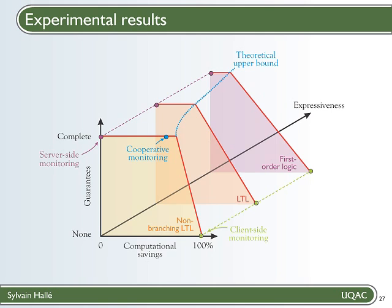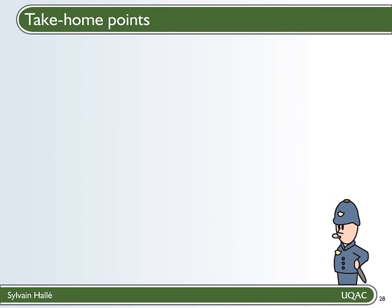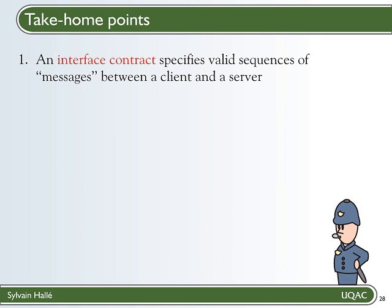Okay, that's enough for today. Now let's conclude with a couple of take-home points to tell your grandma. First of all, we've seen that an interface contract is a way of specifying valid sequences of messages between a client and a server. And we know that this general terminology can be mapped to concepts in different contexts, such as object-oriented programming or web services.